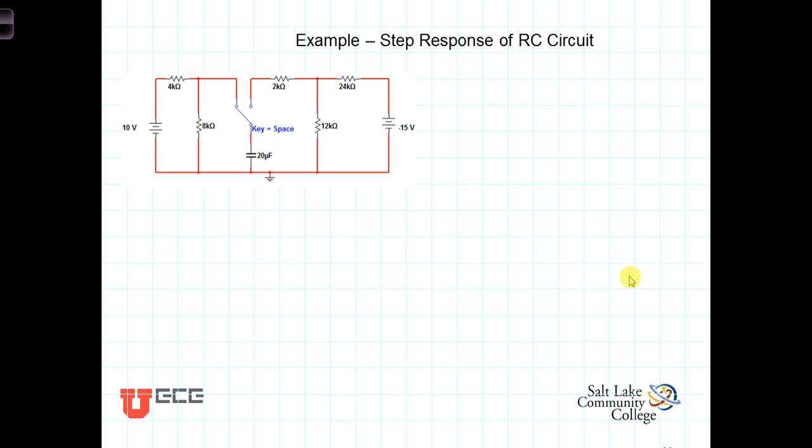Let's do an example to show how we're going to be analyzing these RC and RL circuits for their step response. In this case, we'll do a step response. We're looking for the voltage across the capacitor as a function of time. So we know that V across the capacitor as a function of time is equal to the final voltage, or V infinity,